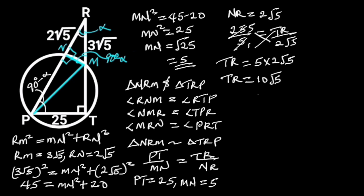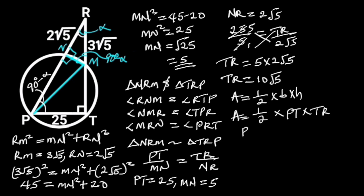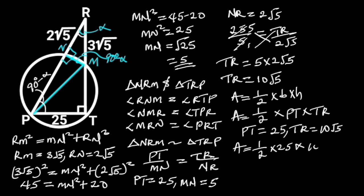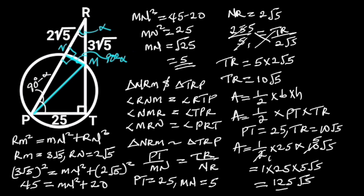And TR is the height of triangle TRP. Now we know the height of triangle TRP, let's find the area. The area of a triangle is ½ times base times height. For triangle TRP, the area equals ½ times PT times TR. PT is 25 and TR is 10√5. Substituting: area = ½ × 25 × 10√5. Since 10 ÷ 2 = 5, we get 25 × 5√5 = 125√5. Hence, the area of triangle TRP is equal to 125√5 square units.